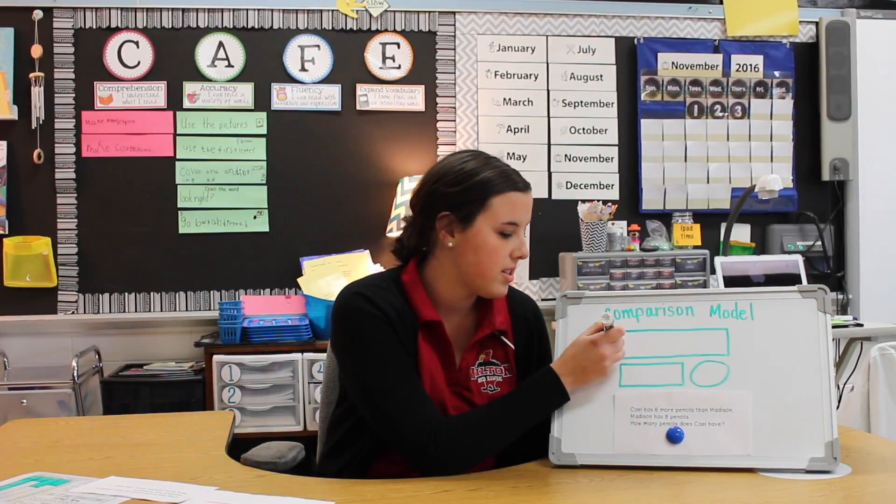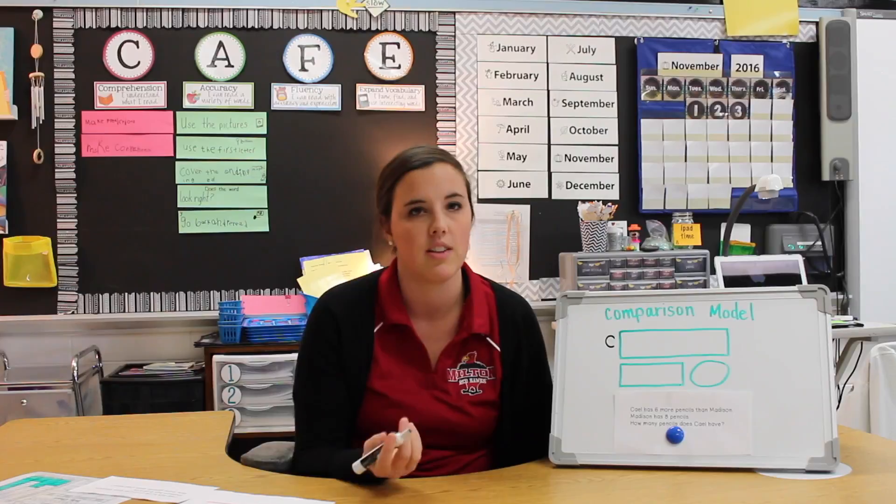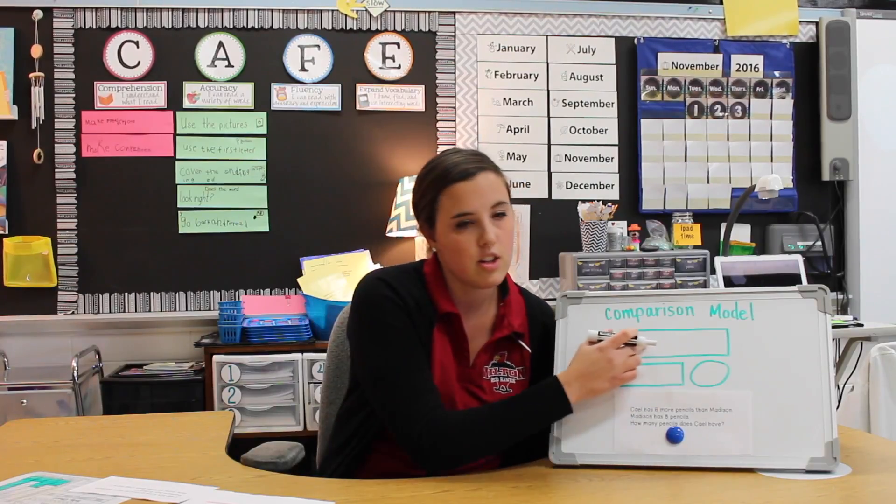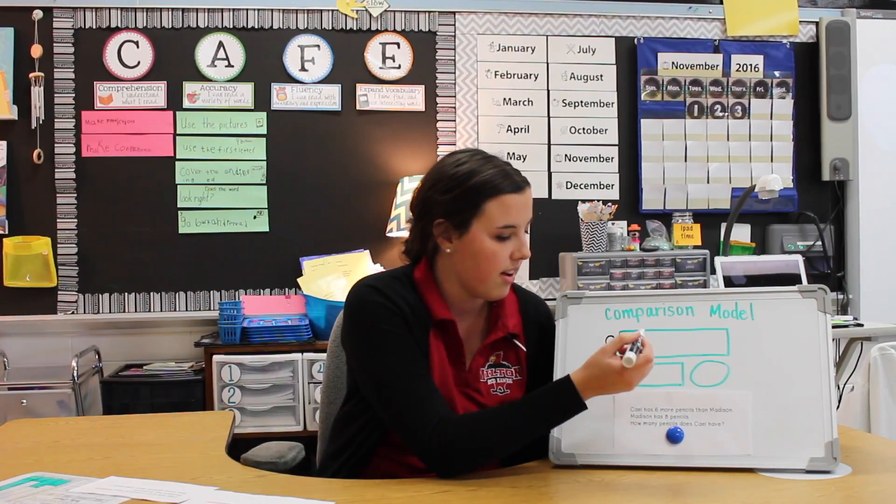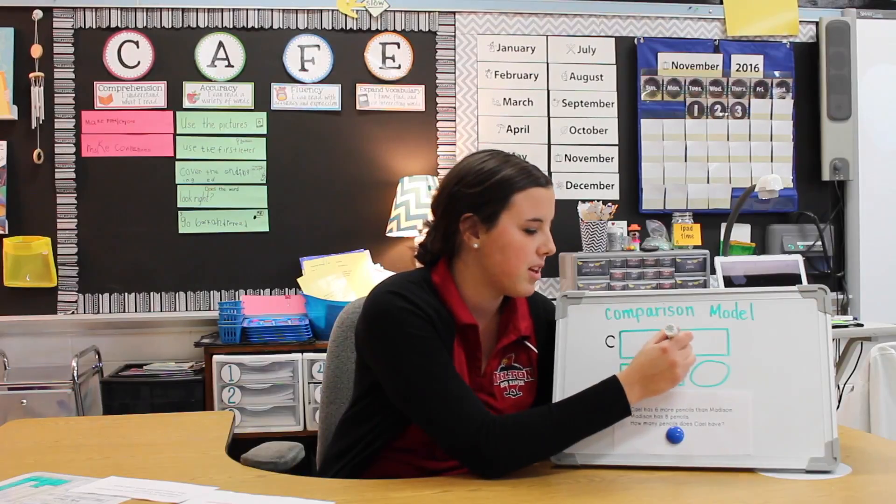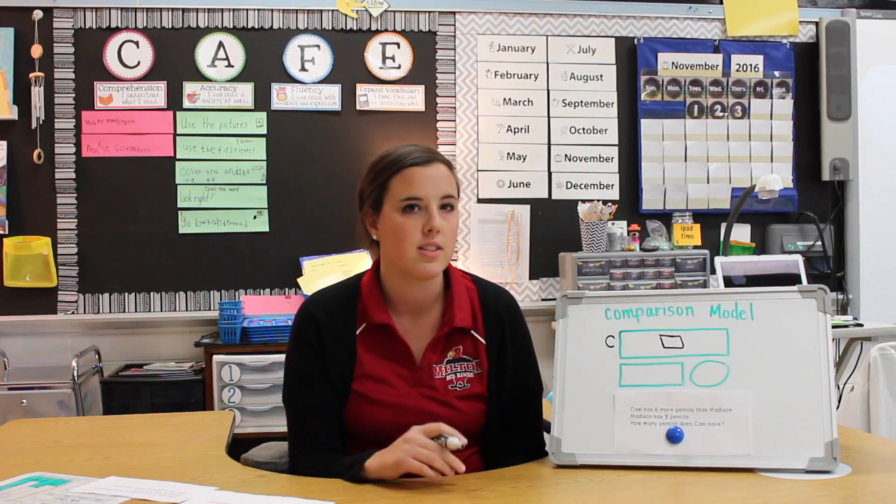To represent that, we'll put a C by the larger bar to stand for Cal, and then in the larger bar we're going to put a box because we're unsure of how many pencils Cal has.